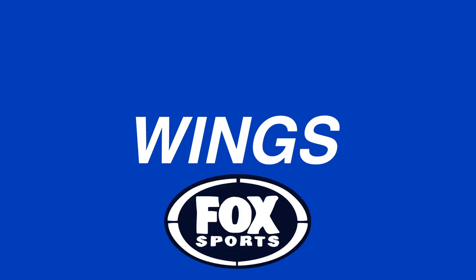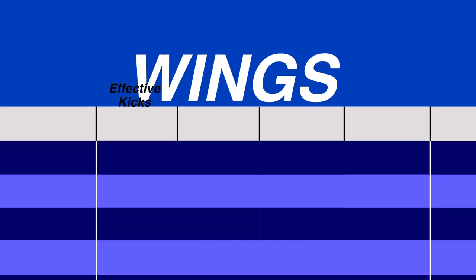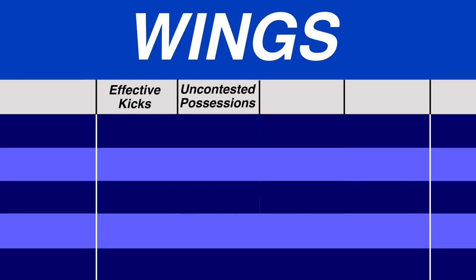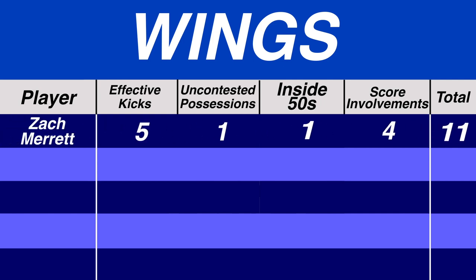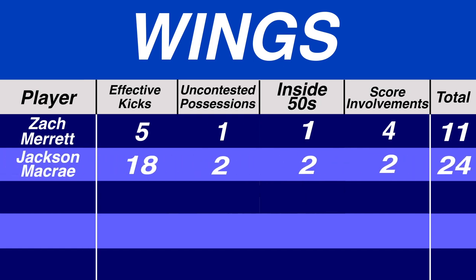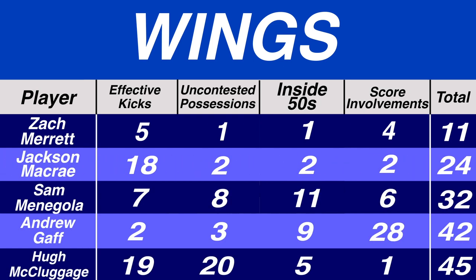A lot is made of the wingers selection every year, so we wanted to keep with our theme of choosing a realistically structured side and pick two real wingmen. As a result, we switched to Fox Footy's stats table, which allowed us to search by wingers. The chosen categories were effective kicks, uncontested possessions, inside fifties, and score involvements. Zach Merrett was far and away the clear winner with 11 points, and Jack Macrae kept his All-Australian spot in 2nd on 24.